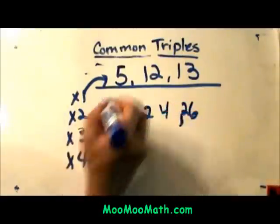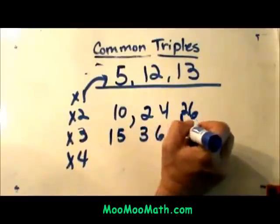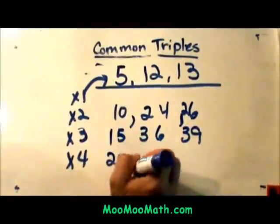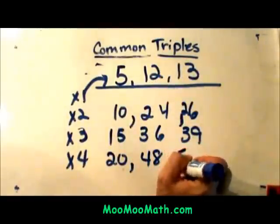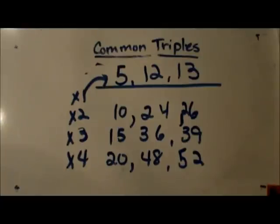If I multiply by 3, that's 15, 36, 39. If I multiply by 4, that's going to give me 20, 48, and 52. So those would be sides of a right triangle that would be whole numbers that you might recognize from this family of the 5, 12, 13 triple. Hope this one was helpful.